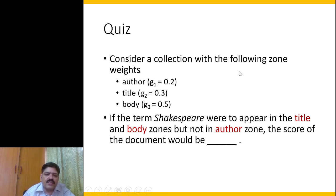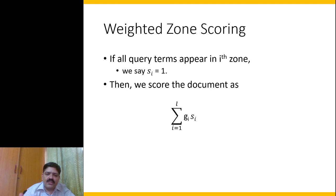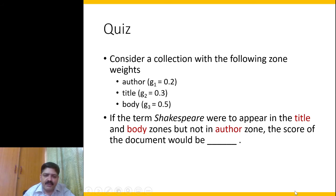Consider a collection with zone weights: author 0.2, title 0.3, and body 0.5. If the term 'Shakespeare' appears in the title and body zones but not in the author zone, the score would be 0.8. We look for either appearance or non-appearance of a term in each zone, using 1 if present and 0 if not. Since Shakespeare is not in the author zone, we add 0×0.2 + 1×0.3 + 1×0.5 = 0.8.